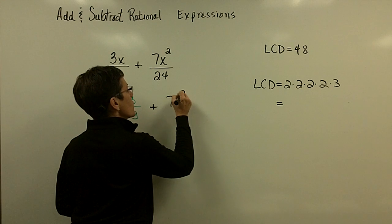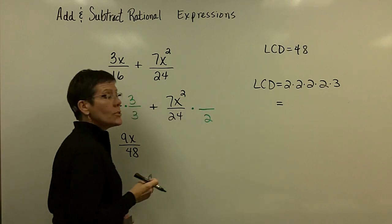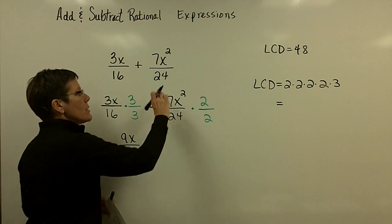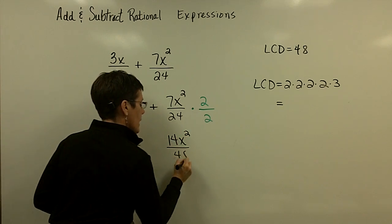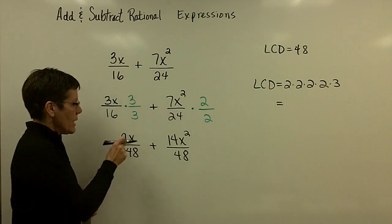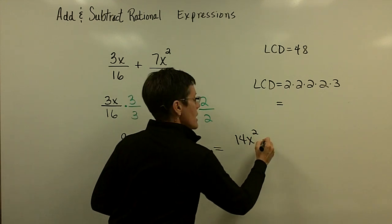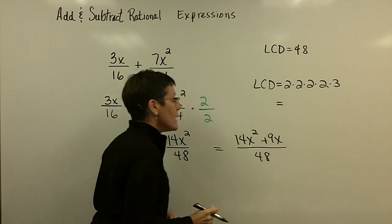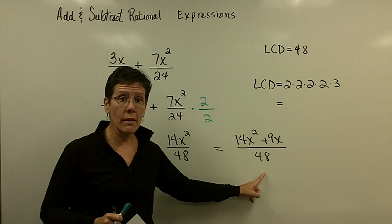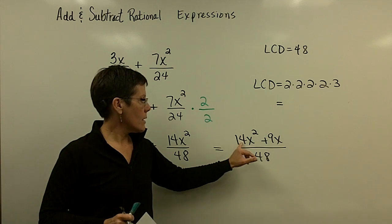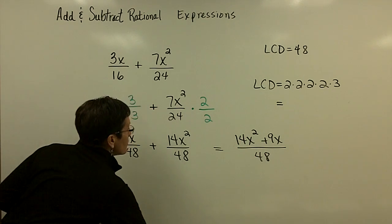The next fraction: 7x² over 24. Its denominator needs to become 48, so I multiply that denominator by 2, and therefore the numerator as well. That gives 14x² over 48. Don't reduce it — you are ready to add now. Take those numerators and put those terms together; they are not like terms. I'll put 14x² first, then 9x, over the common denominator of 48. I'm done because there is nothing I can factor out of those numerators to reduce with the denominator.